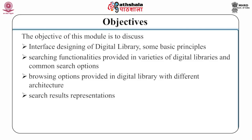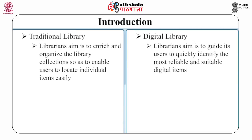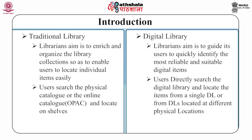In traditional libraries, the role of a librarian is to enrich and organize the library collections so as to enable users to locate individual items easily. Likewise, the primary aim of a digital library is to guide its users to quickly identify the most reliable and suitable digital items. In traditional libraries, users search for desired information sources by searching the physical catalog or the online catalog OPAC in automated libraries.